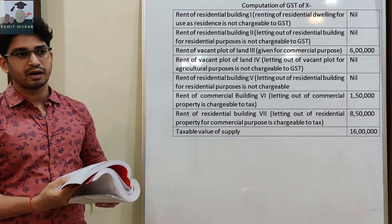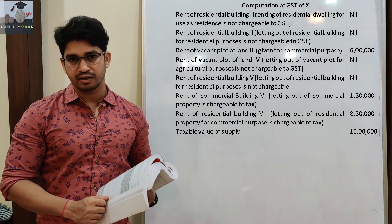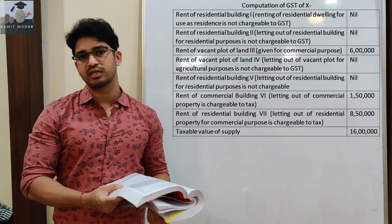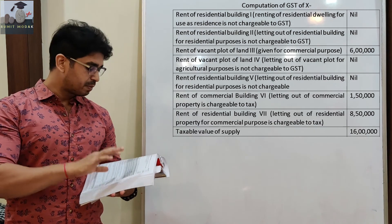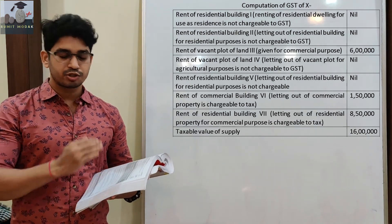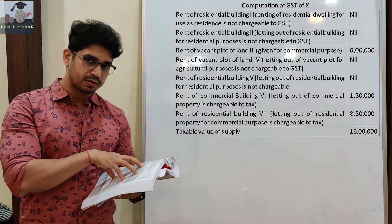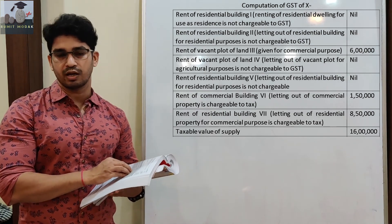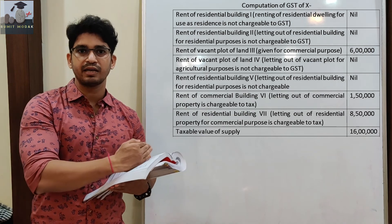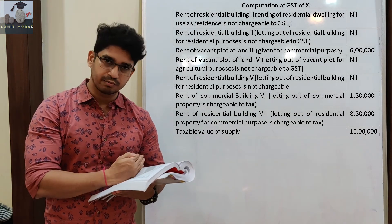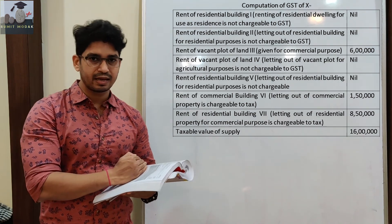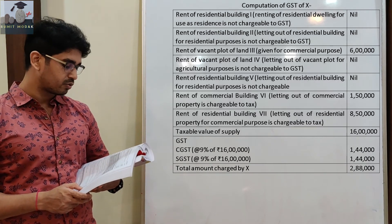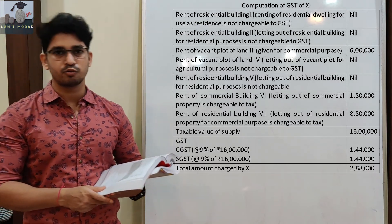GST is calculated on the taxable value of supply of Rs. 16 lakh. The total GST rate is 18%. Since the taxable supply is Rs. 16 lakh, CGST at 9% on Rs. 16 lakh comes to Rs. 1,44,000, and SGST at 9% on Rs. 16 lakh also comes to Rs. 1,44,000. Half of GST is collected by the central government and the other half by the state government. So total GST is Rs. 2,88,000.